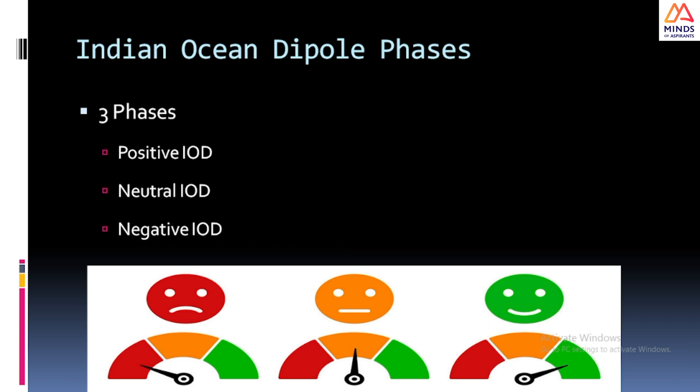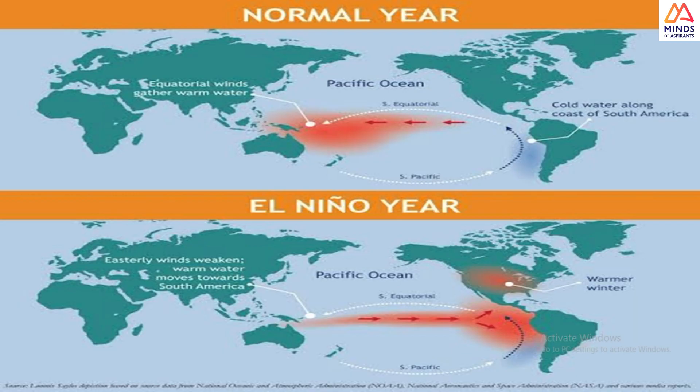Coming to the phases, we will have three phases: a positive IOD, a neutral IOD which doesn't have any significant effect on other countries, and a negative IOD. Before going into that, let's briefly revisit some background.